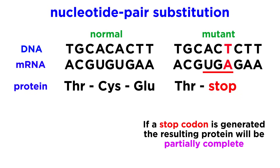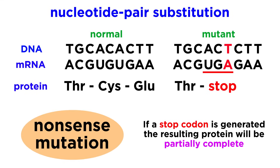Lastly, it is possible that a substitution of this nature could cause the corresponding mRNA codon to no longer code for an amino acid, but to instead become a stop codon. We call this a nonsense mutation. This means that instead of the ribosome translating the rest of the mRNA strand, it will just stop entirely, resulting in a partially complete protein. Unless the new stop codon is extremely close to the intended stop codon, it is highly unlikely that this protein fragment will be able to perform its intended function.